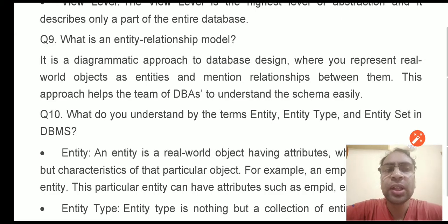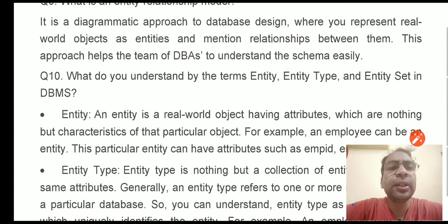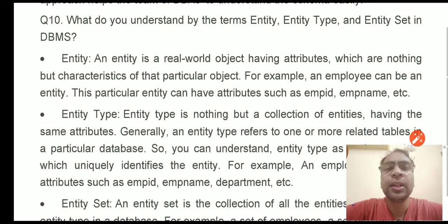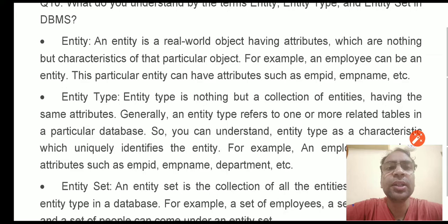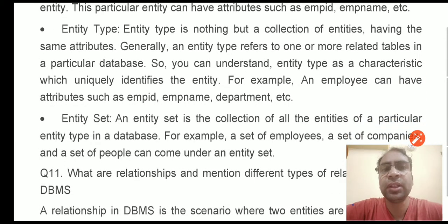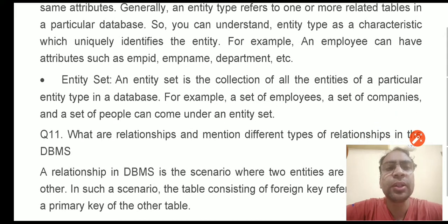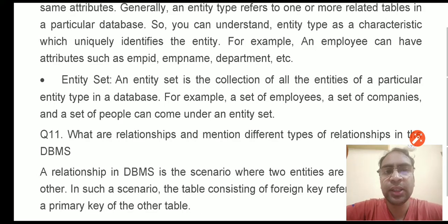We also mention the attributes of the entities. What do you understand by the terms entity, entity type, and entity set in DBMS? An entity is basically a real-world object having some attributes and characteristics. The entity type is a collection of entities having the same attributes. An entity set is the collection of all the entities of a particular entity type in a database.